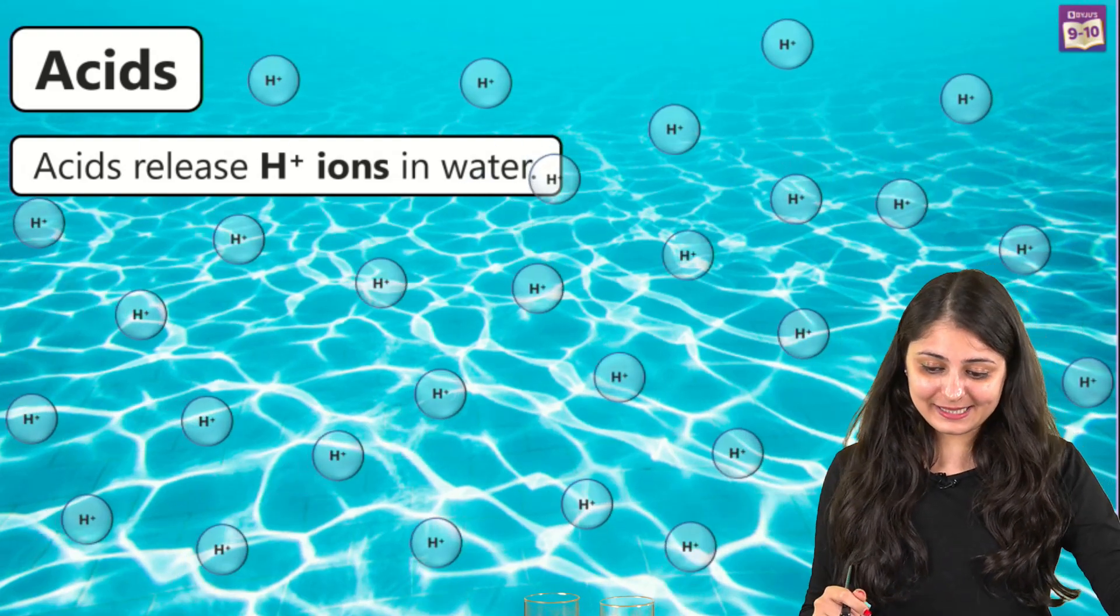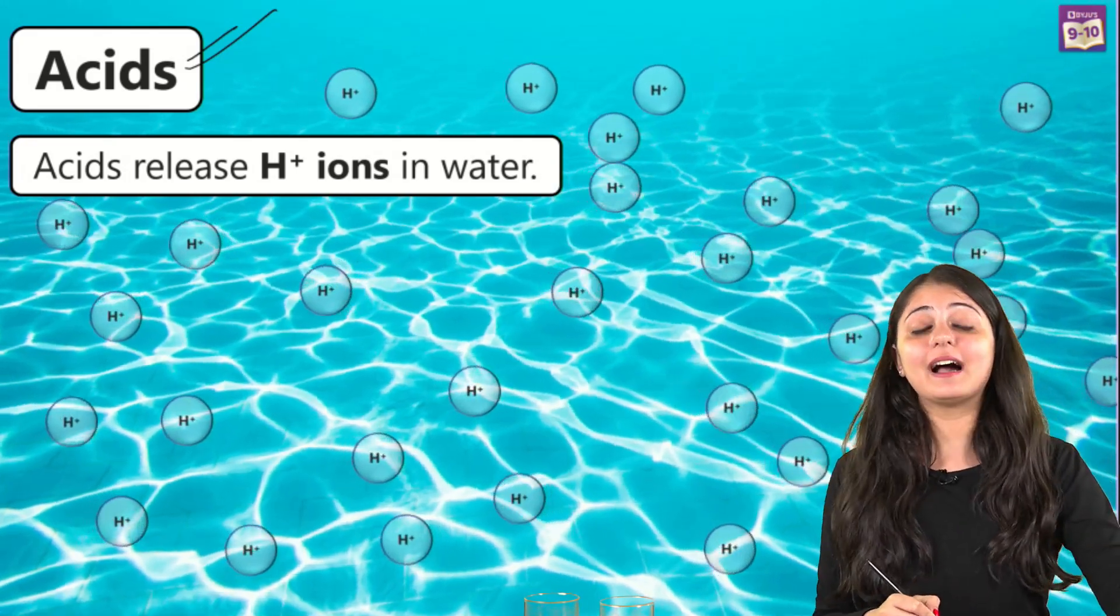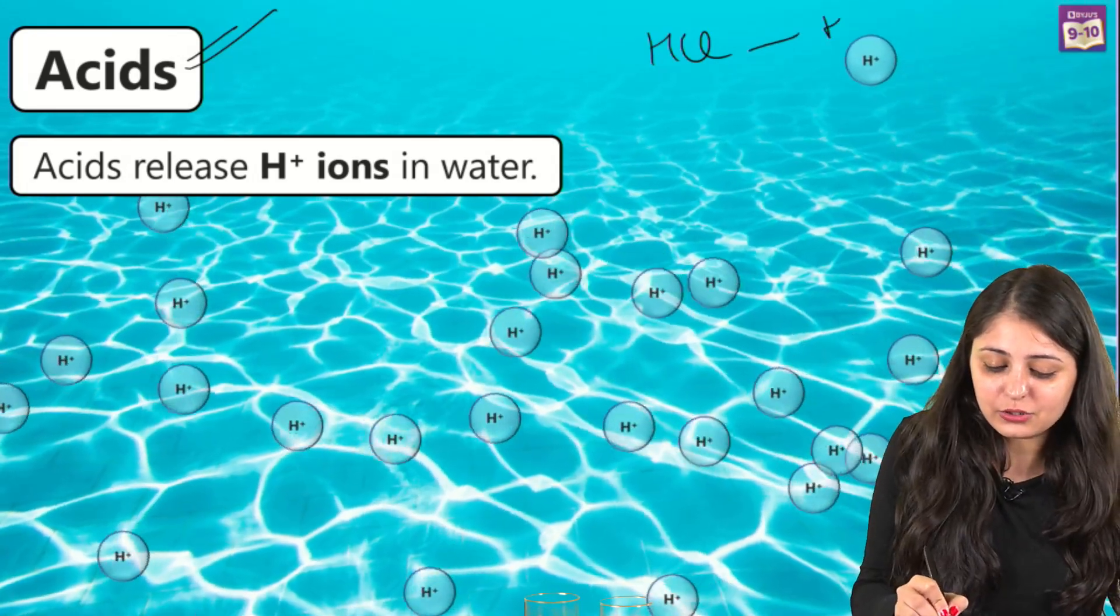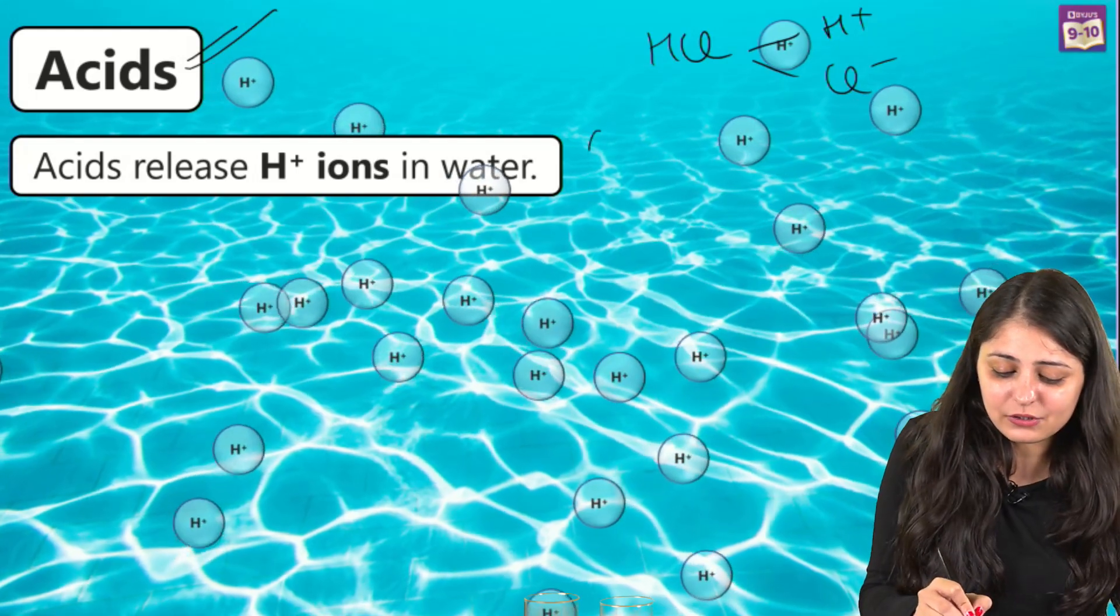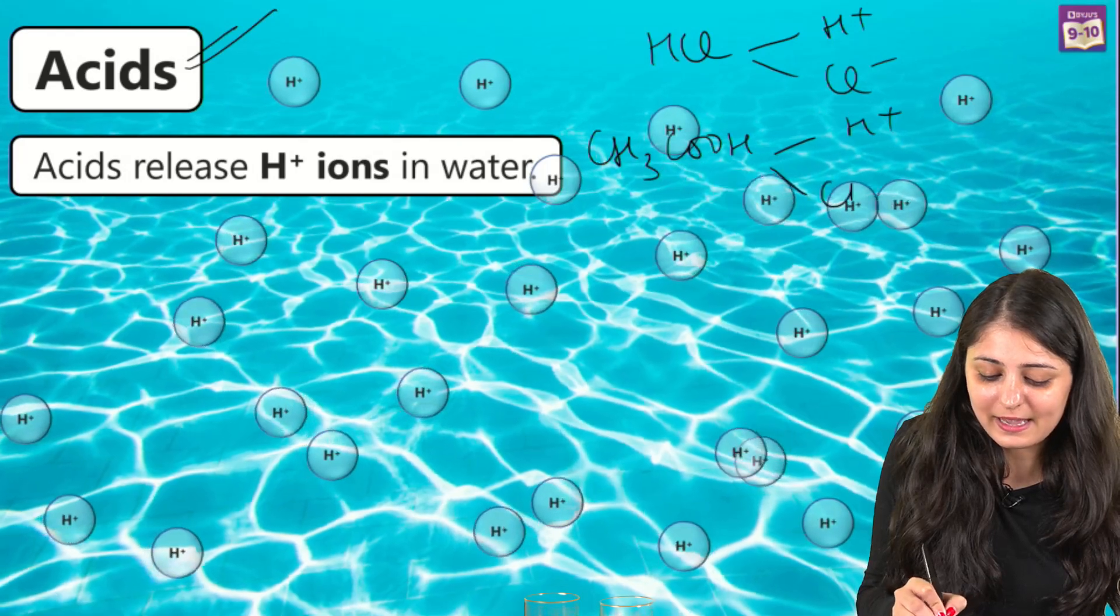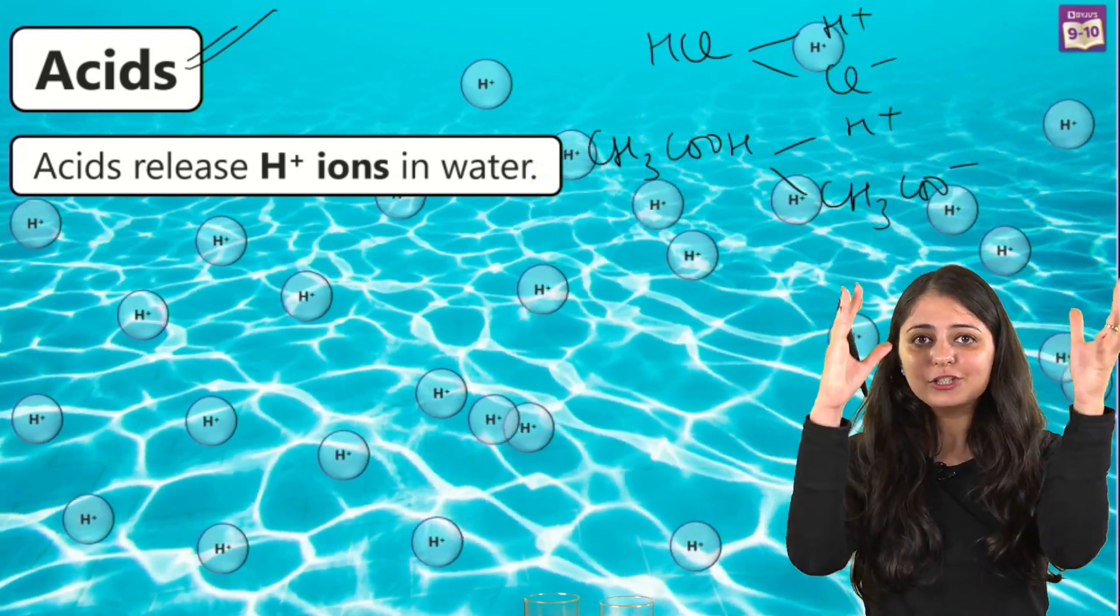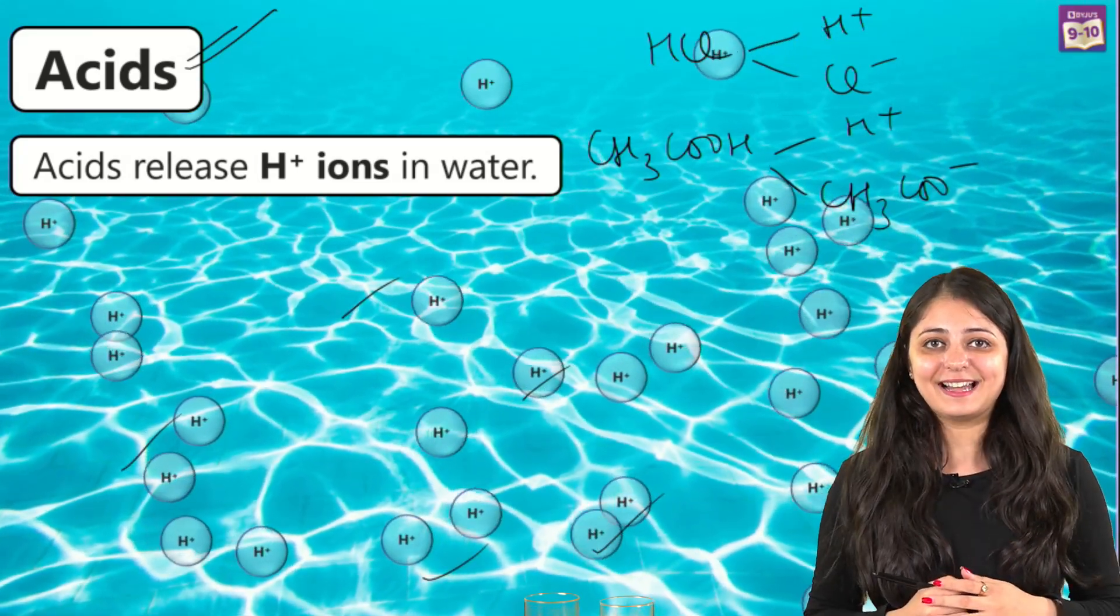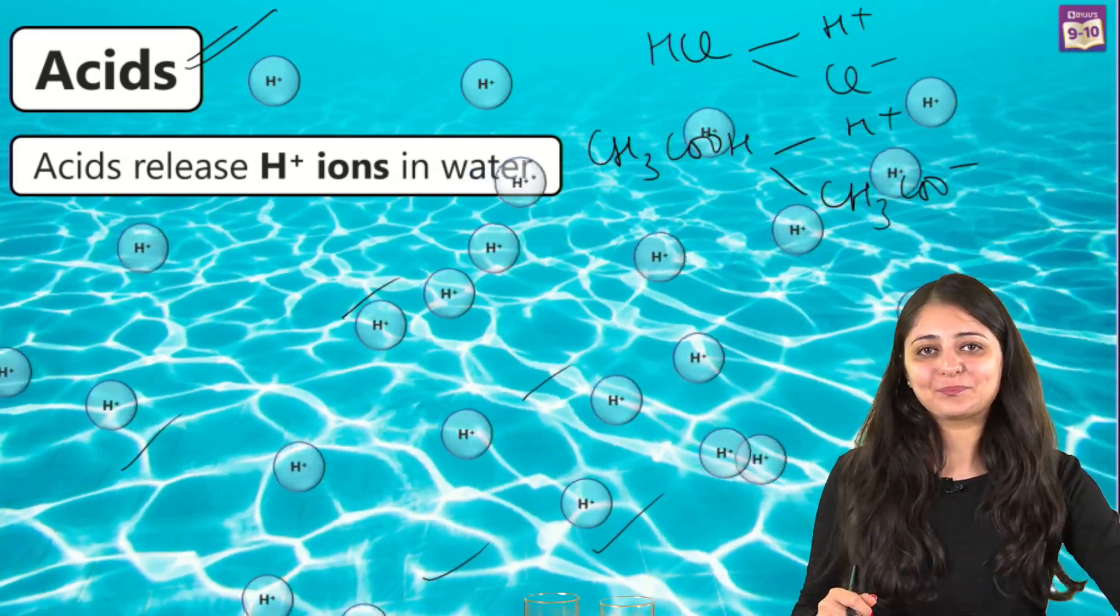To answer this, first thing we need to know is what are acids. Acids actually release H+ ions in water. For example, HCl breaks into H+ and Cl- ions. Similarly, acetic acid breaks into H+ and acetate ions. The presence of these H+ ions is why they are being classified as acids.